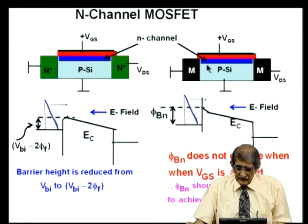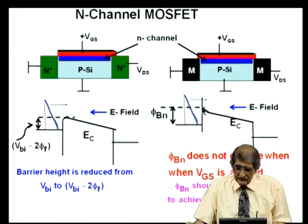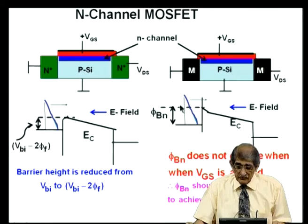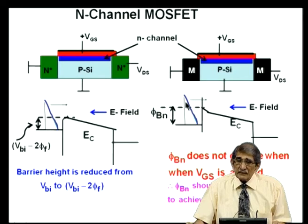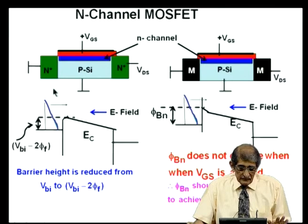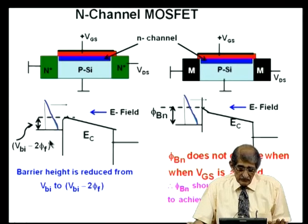When I apply voltage across that by applying gate VGS plus, it is this potential barrier on the silicon side which is changing, not the metal side. As a result, the number of electrons available for transport from the metal to semiconductor are limited to those electrons which have energies above φBN — that does not change. Whereas, in the n-plus junction case, that barrier itself changes by 2φ. That is the difference.